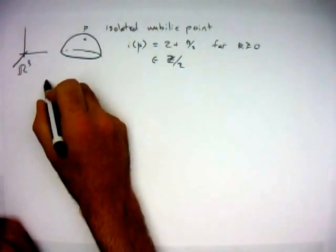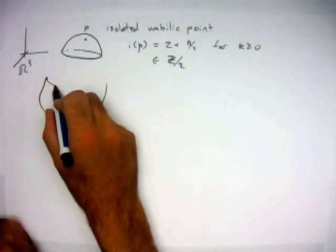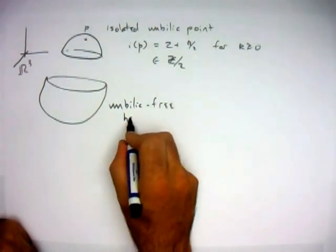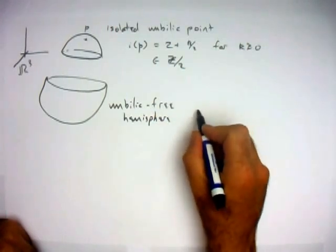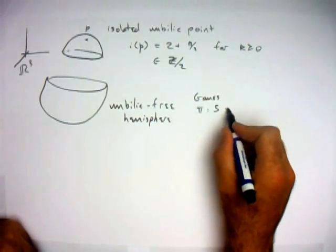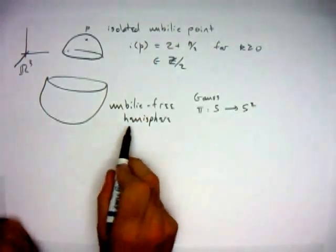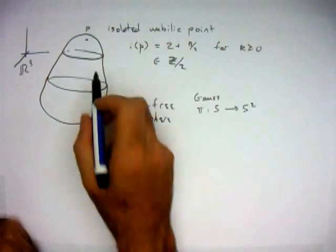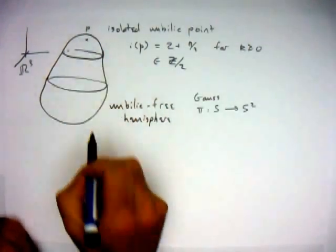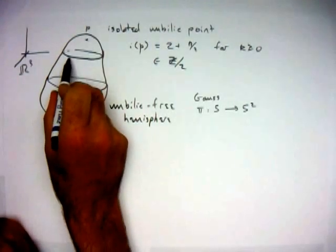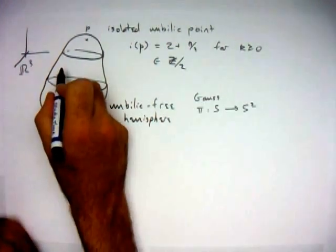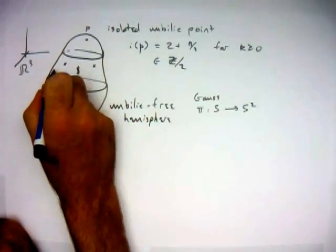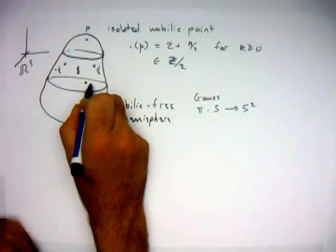To prove this, we take this surface and attach it to another convex surface without umbilic points — we call it an umbilic-free hemisphere. It's a hemisphere because the Gauss map, which takes a surface to the direction of its normal, fills out a hemisphere as its image. Given that, we can close up the surface in a convex manner and join it to this hemisphere. In the annulus between the two, there will be umbilic points. Generically these umbilic points will be isolated, and moreover they will have index plus 1/2 or minus 1/2.